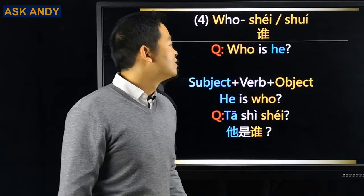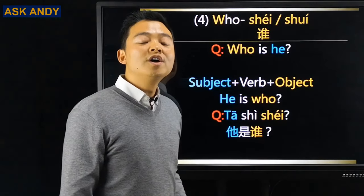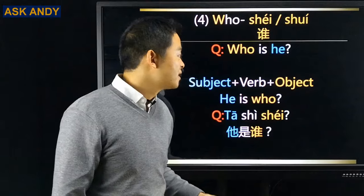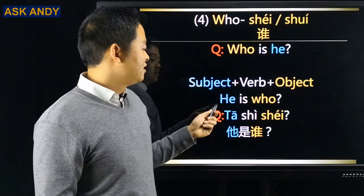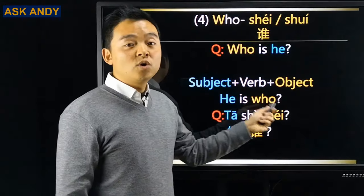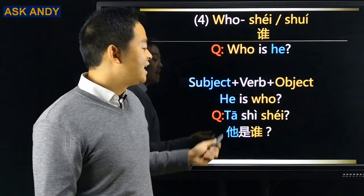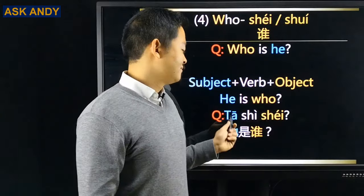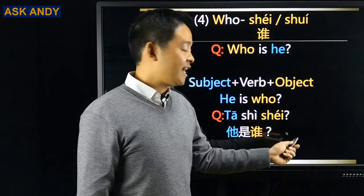Number four: who — 谁 (shéi) or 谁 (shuí). I recommend 谁 (shéi). 'Who is he?' Rearrange to 'he is who': 他是谁?